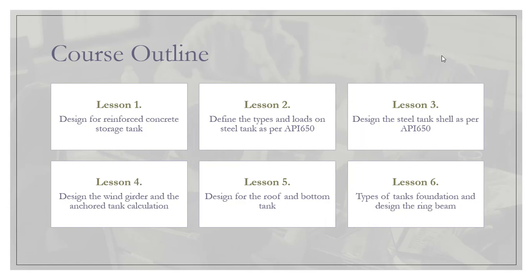Our target is how we can design these structures. Another major topic in our online course covers the steel storage tank per API 650. We will discuss types of tanks in general — fixed roof, external floating, internal floating — and how to distinguish between them. We'll also cover the collaboration between the static equipment engineer and the civil engineer, and all loads: dead load, live load, internal pressure, external pressure, wind load, and seismic load.